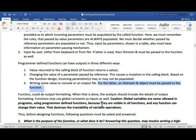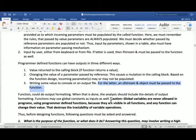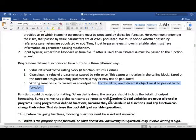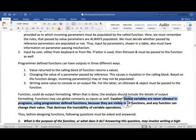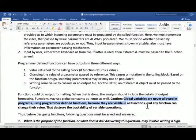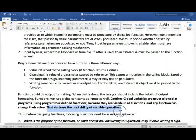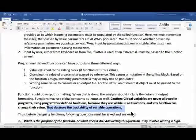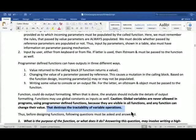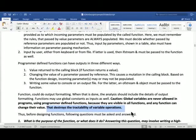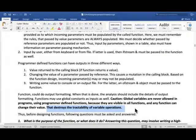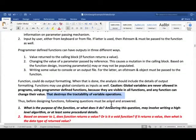Function may use global constants as well. There are a lot of these rules I tell you as we go along. Global variables are never allowed in programs that use programmer-defined functions because they are visible in all the functions and any function can change the value. That destroys the traceability of variable operations. So you cannot write any variables in the global space before beginning of main function, although constants you always can and always should. Therefore, before designing functions, the following questions must be asked and answered.